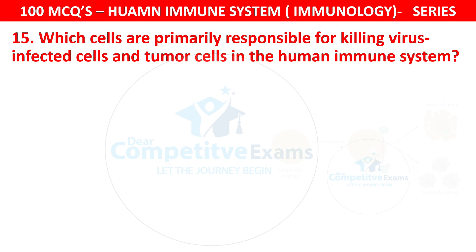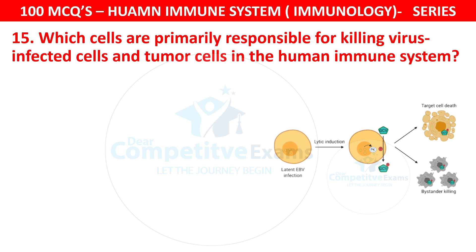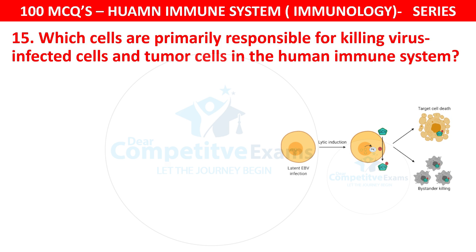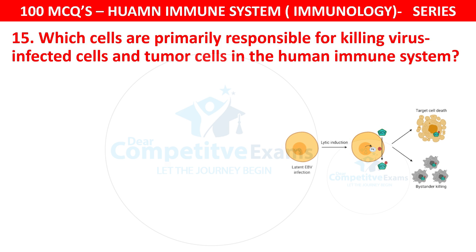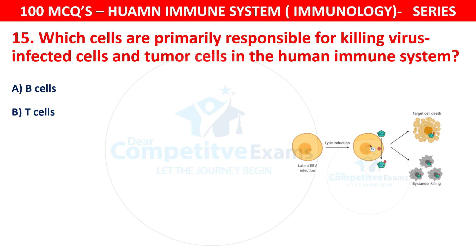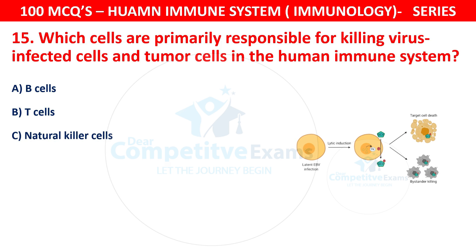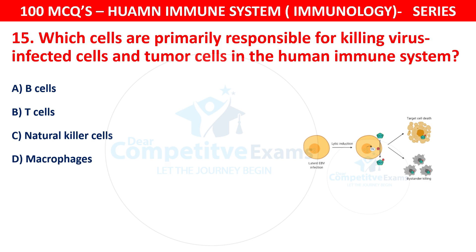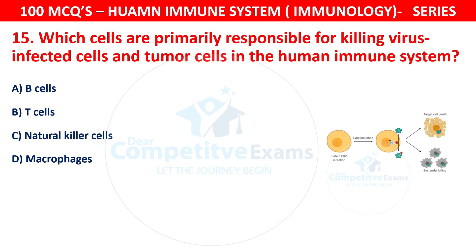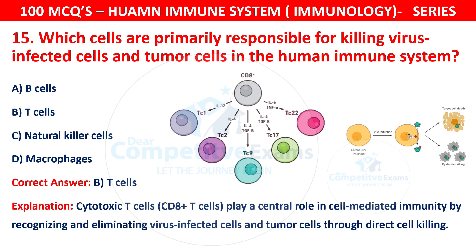Question 15. Which cells are primarily responsible for killing virus-infected cells and tumor cells in the human immune system? Your options are B cells, T cells, natural killer cells, or macrophages. The correct answer is B — T cells. Cytotoxic T cells (CD8+ T cells) play a central role in cell-mediated immunity by recognizing and eliminating virus-infected cells and tumor cells through direct cell killing.